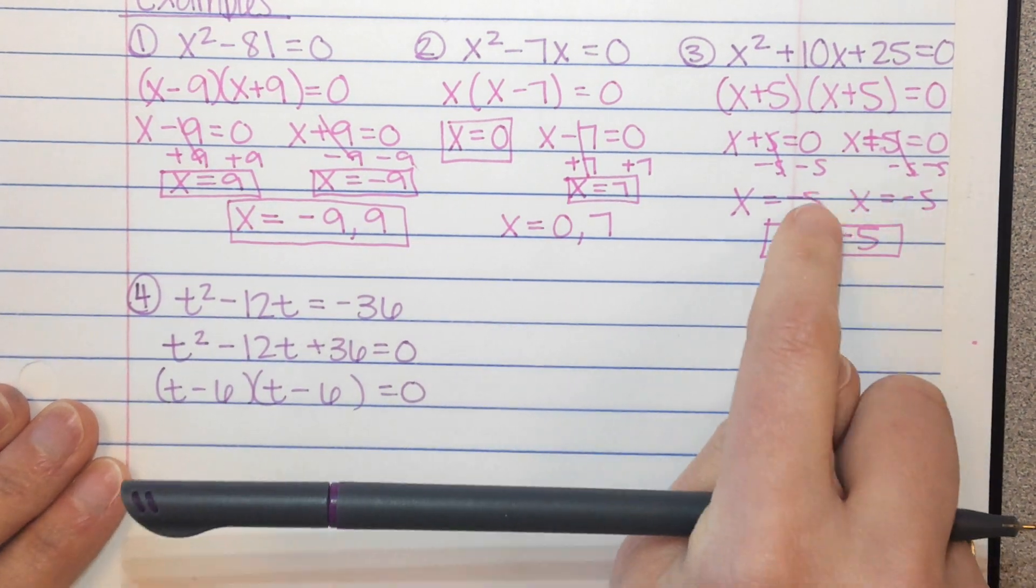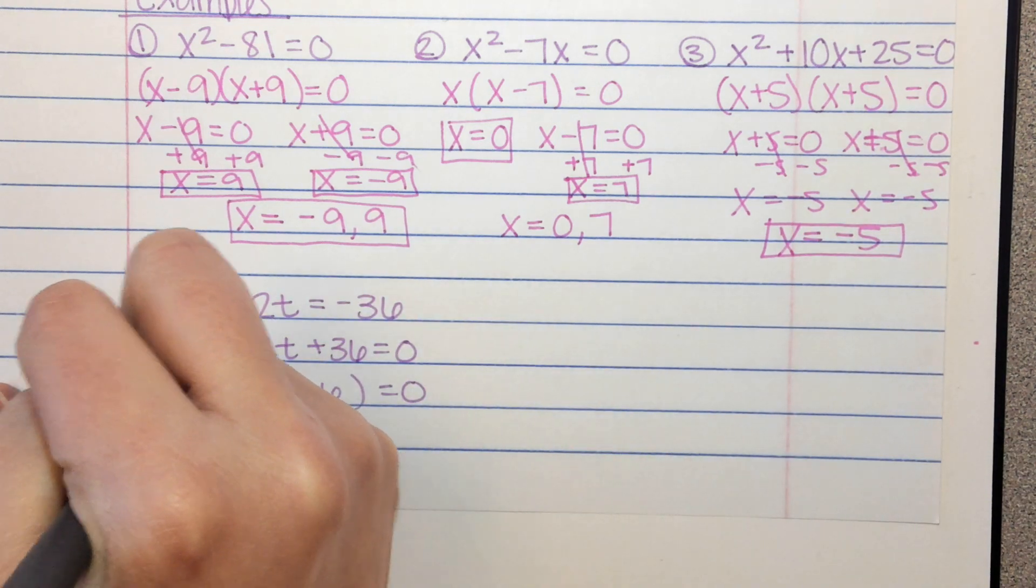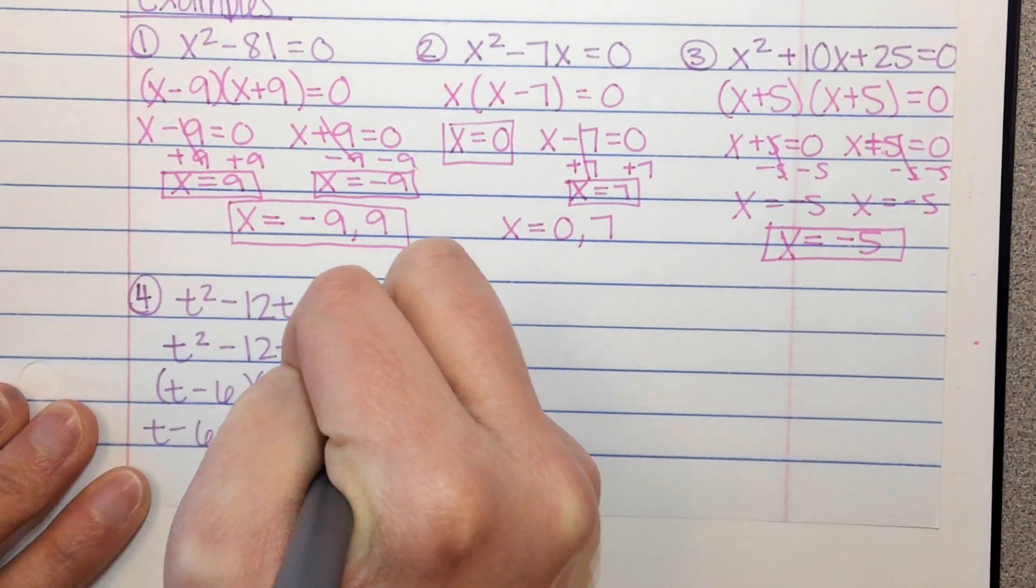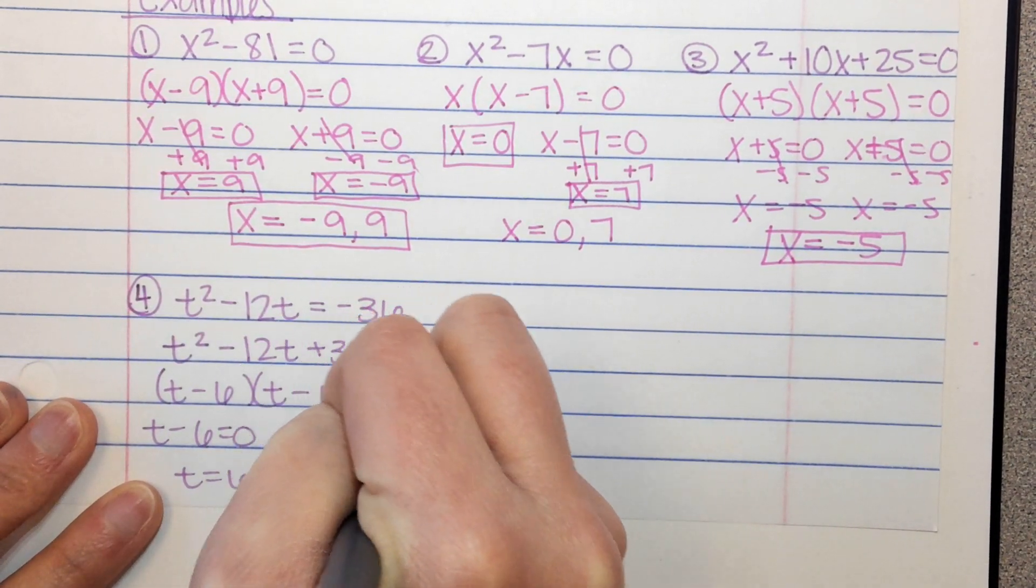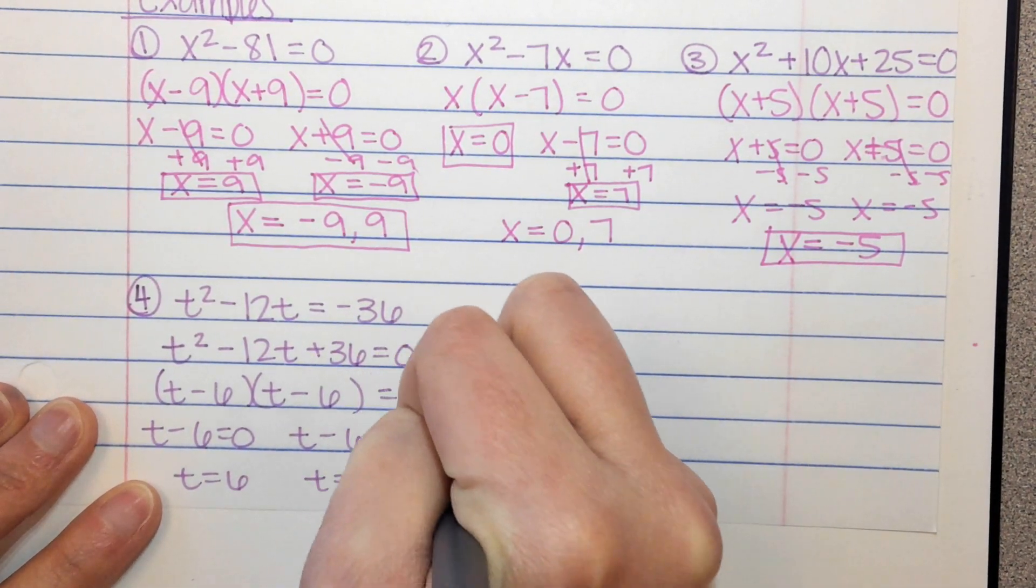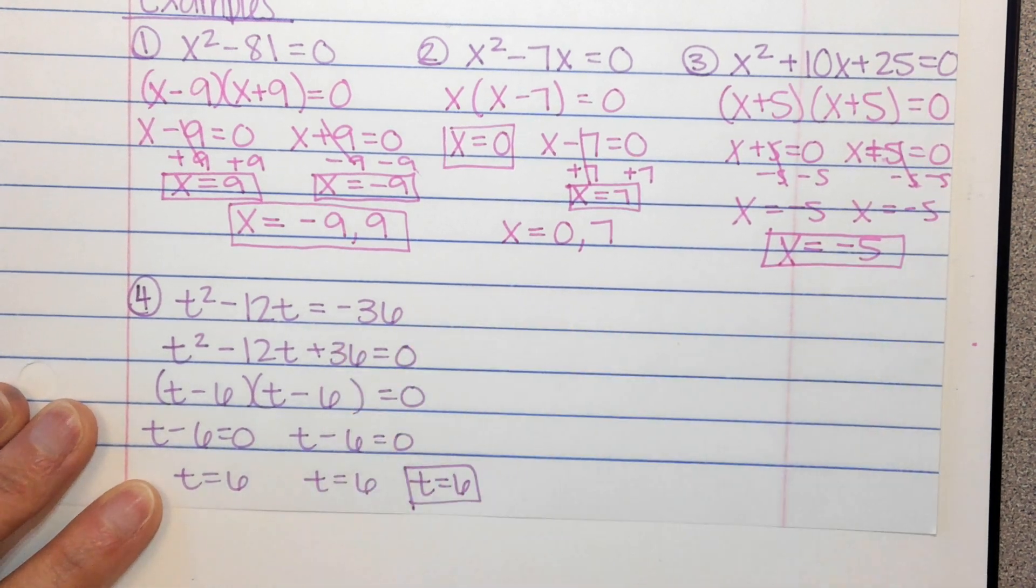So it's going to work out very similar to this one. We set each of those equal to 0. Get t equals 6 and t equals 6. And so your final answer is just t equals 6.